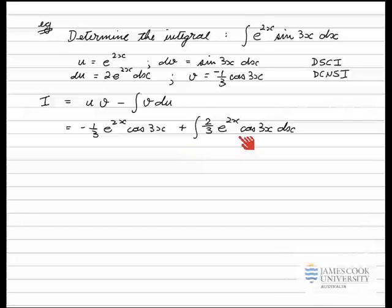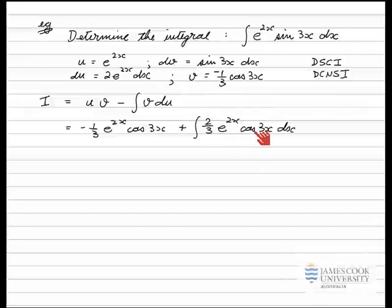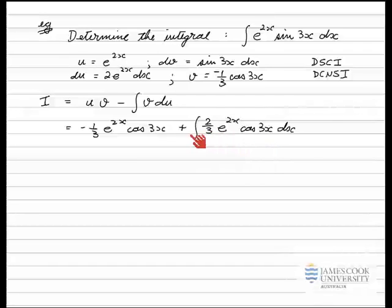So there's the first run of my integration by parts. I look at that and see that I've transformed the integral of an exponential and a sine into this function plus the integral of an exponential and a cos. So I haven't really simplified anything. If I do the integration by parts process again on this integral, using the same functions for u as the exponential and dv as the trig function with dx, then I should end up with my same integral that I started with. I'll rewrite this, taking the 2/3 out the front.